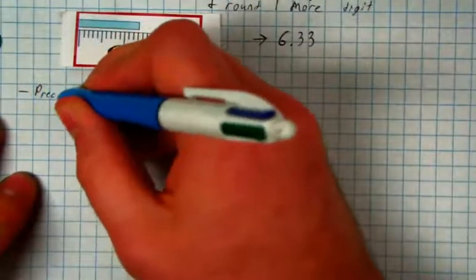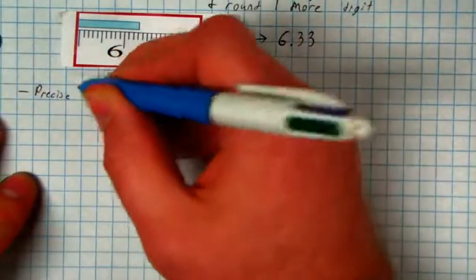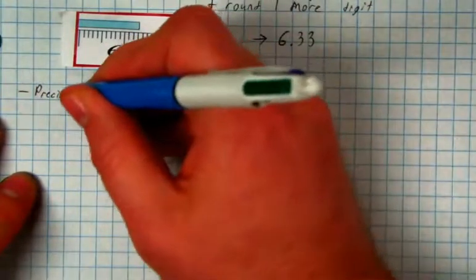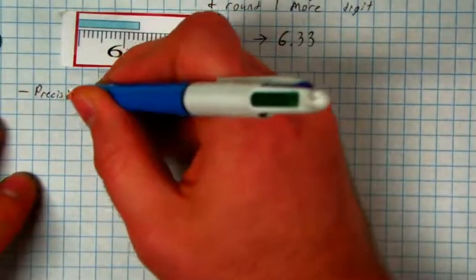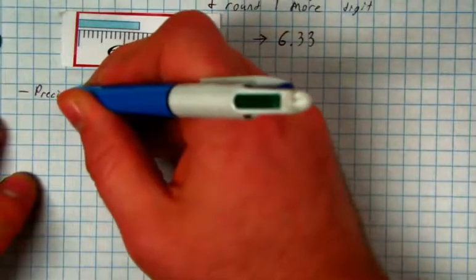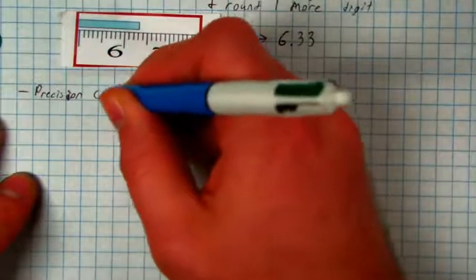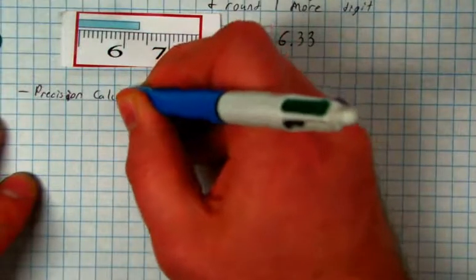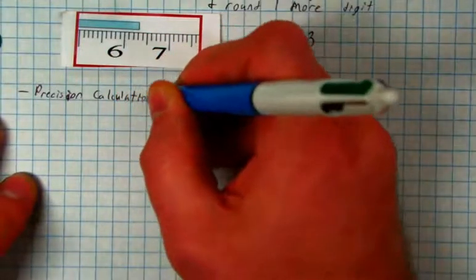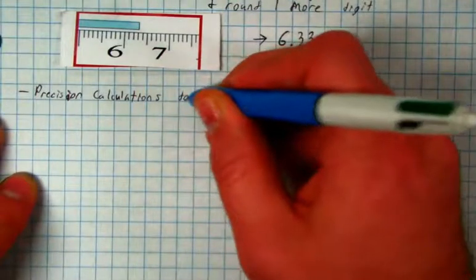So how do you take those precise measurements and use them for calculations? So we'll say precision calculations, done in four ways.